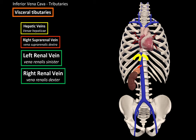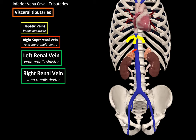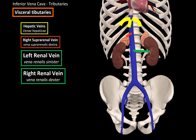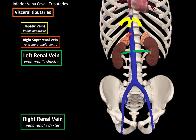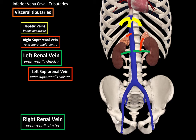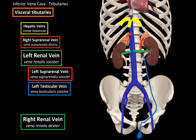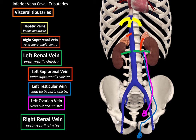Next we have the renal veins. The left renal vein goes to the left kidney, and the right renal vein goes to the right kidney. The left renal vein also has tributaries: the left suprarenal vein drains the suprarenal gland into it, the left testicular vein drains the left testis, and the left ovarian vein drains the left ovary. These three veins drain into the left renal vein and then into the inferior vena cava.